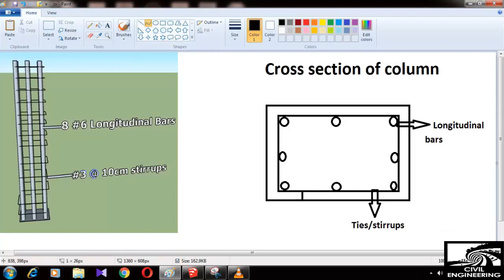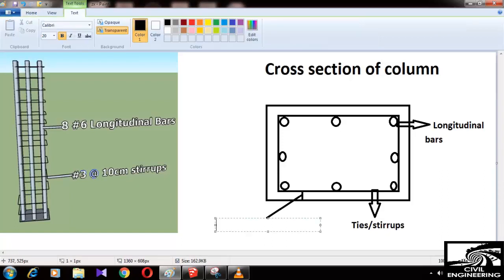This is the clear cover which we should provide according to the standard codes. This clear cover ranges from 1.5 to 2 inches, but we have provided 1.5 inches in columns.